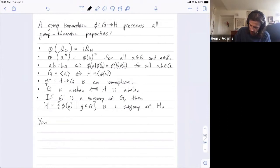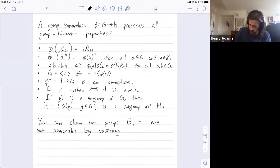You can show two groups G and H are not isomorphic by observing any one of the following: The size of G is not equal to the size of H. If two groups have different sizes, then they're definitely not isomorphic. You can't even find a bijection or a one-to-one and onto function between them.